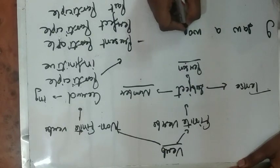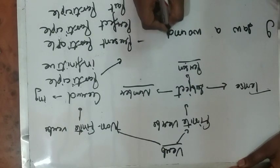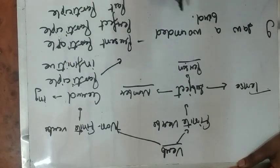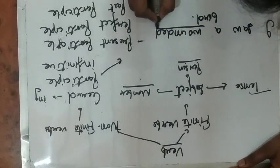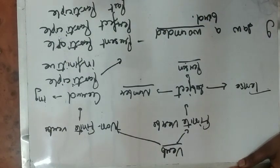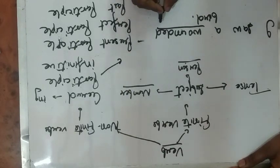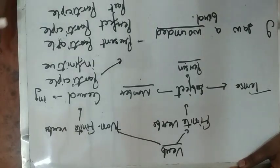I saw a wounded bird. Here 'wounded' is a past participle. It is a third form as well and it performs the function of an adjective as well. It is a non-finite verb.